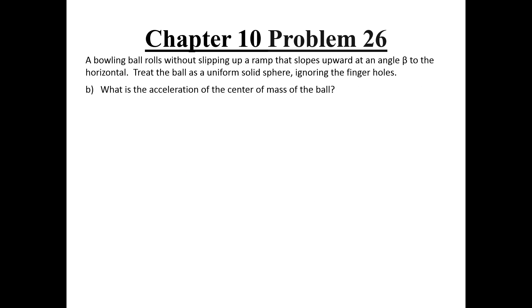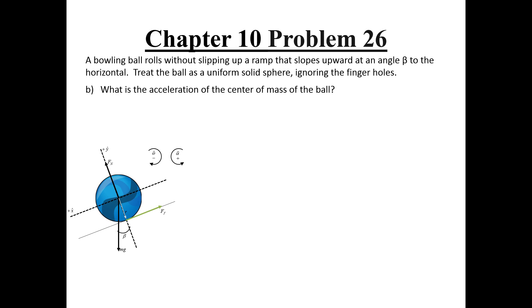Now that we know what the free body diagram looks like, we can find the acceleration of the center of mass. We will extract the equation of motion for the x-direction using Newton's second law, with the positive x-direction chosen as down the incline for simplicity. This gives that the x-component of the gravitational force minus the force of friction equals the mass of the ball multiplied by its center of mass acceleration. Because the problem doesn't provide the coefficient of friction, we need another way to determine the frictional force before solving for acceleration.